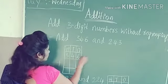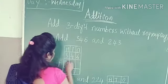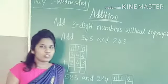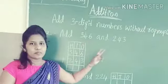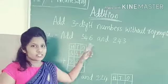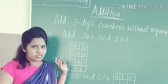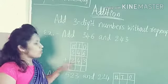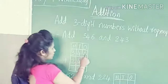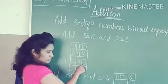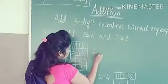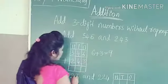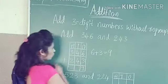346 and 243. As we all know, while adding numbers we always start from the ones place. So we add the numbers at the ones place. Here 6 is there and here 3 is there. 6 plus 3 — how much, children? Yes, 9. So I write 9 at the ones place.